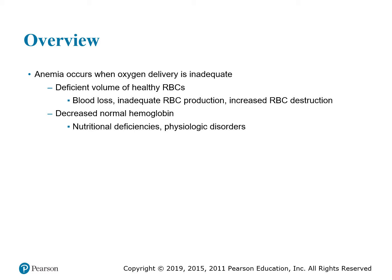Decreased normal hemoglobin can occur from nutritional deficiencies and certain physiologic disorders. Anemia occurs when oxygen delivery is inadequate as a result of deficient hematocrit — the volume percentage of healthy red blood cells — or a decreased amount of normal hemoglobin. Oxygen attaches to the hemoglobin to be carried to the tissues. Symptoms are vague; fatigue is usually the first symptom. You feel very sluggish and weak and your skin may be pale. There's a picture on page 69 comparing someone anemic to someone who is not.